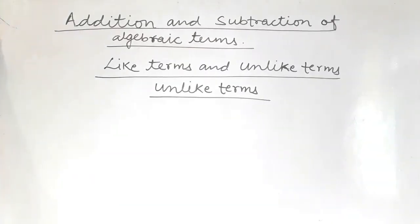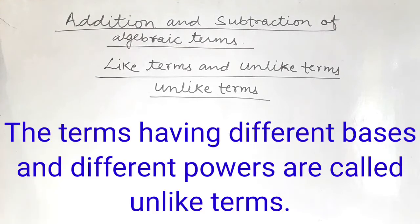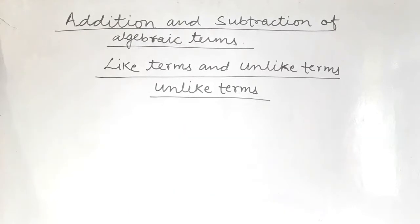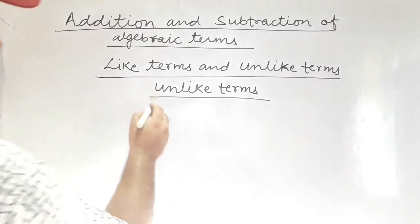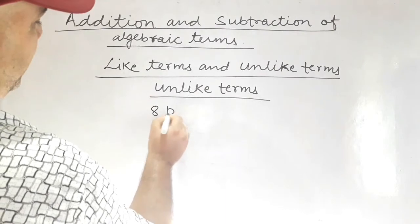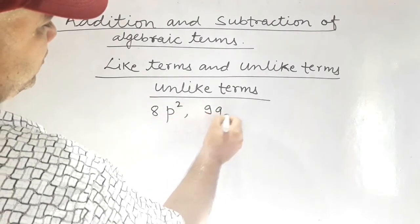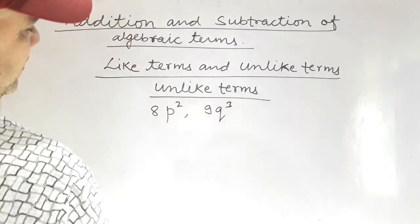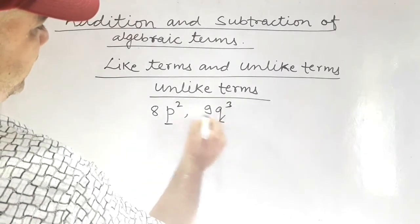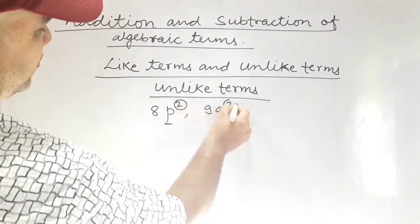Unlike Terms. What are Unlike Terms? The terms having different base and different powers are called Unlike Terms. For example, 8p squared and 9q power 3. Here the bases are different as well as the powers are also different.